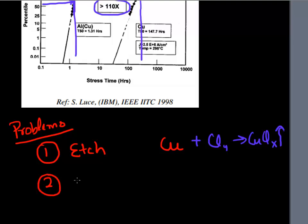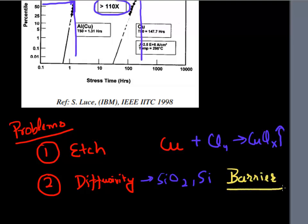Another problem with copper, it has a very high diffusivity. So it likes to diffuse into your oxide. It likes to diffuse into your silicon. So another requirement for copper is to use this thing which is a barrier material. So whenever you need to deposit copper, we need to put a barrier material on top of our oxide. And so these are the two main problems.